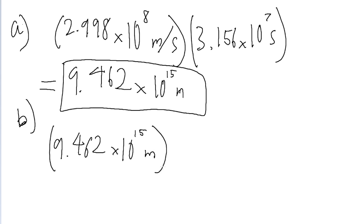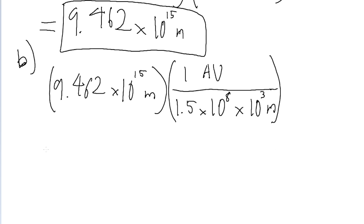And now we're just converting from meters into astronomical units. And the problem straight up tells us that one astronomical unit is equal to 1.5 times 10 to the power of 8 kilometers, except we want this in meters. So to convert from kilometers to meters, we're going to multiply by 10 to the power of 3. So if you put that into a calculator, then we find a distance of 6.31 times 10 to the power of 4 astronomical units.